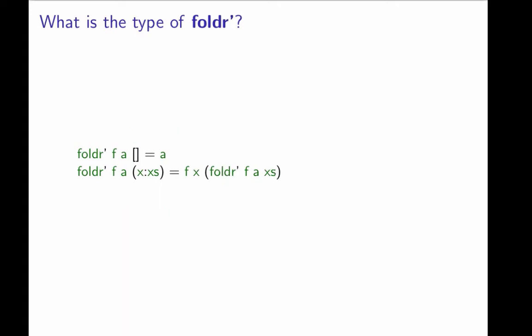Now, what is the type of foldr prime? Well, let's see. Foldr prime takes three arguments. The first argument, which we here call f, is a function of type t to t1 to t1.